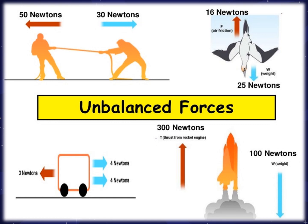How about the bird? The air friction is 16 newtons and the weight of the bird is 25 newtons. Where do you think the direction of the force will go? It's going down. Look at this box with wheels: we have 3 newtons, then 4 newtons, 4 newtons, 8 newtons — the direction will go to the right. How about the spaceship? You have 300 newtons up and 100 newtons down, so the spaceship will go in the direction of the highest force — going up. There is movement if there is unbalanced force.